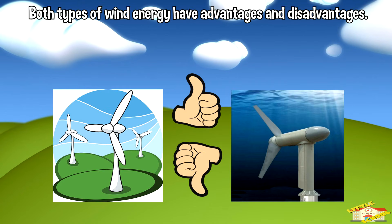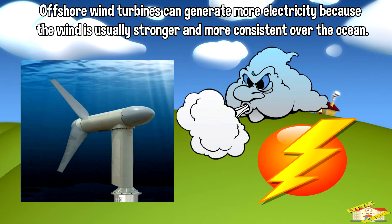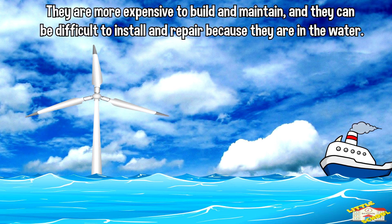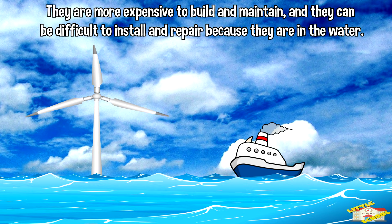Both types of wind energy have advantages and disadvantages. Onshore wind turbines are usually less expensive to build and maintain than offshore wind turbines. Offshore wind turbines can generate more electricity, because the wind is usually stronger and more consistent over the ocean. However, they are more expensive to build and maintain, and they can be difficult to install and repair because they are in the water.